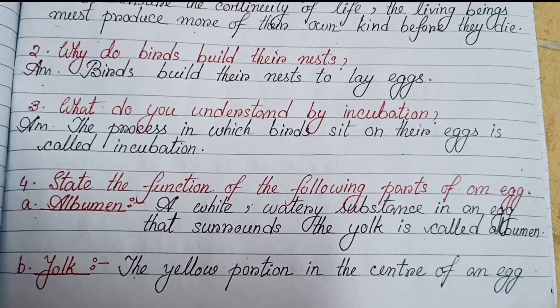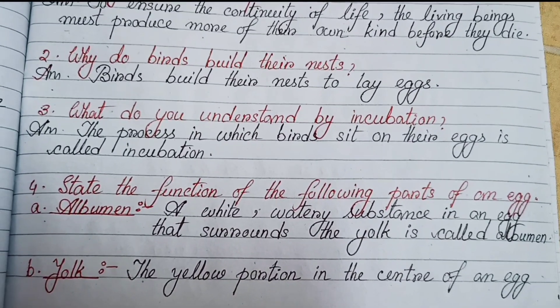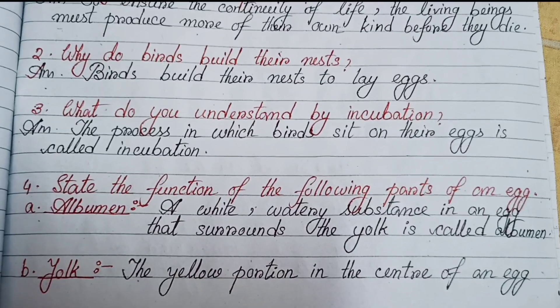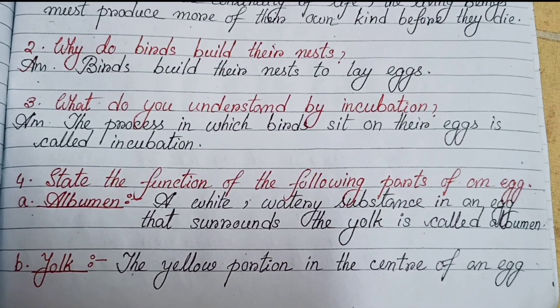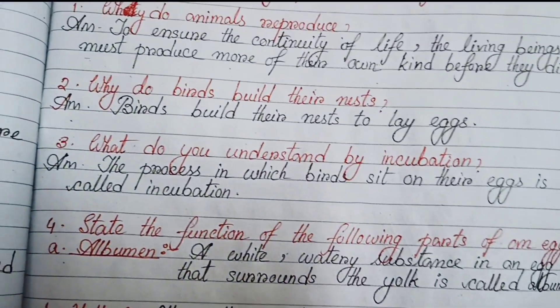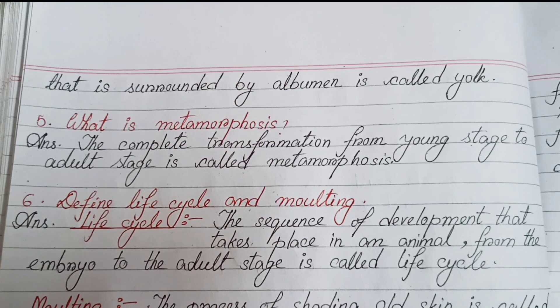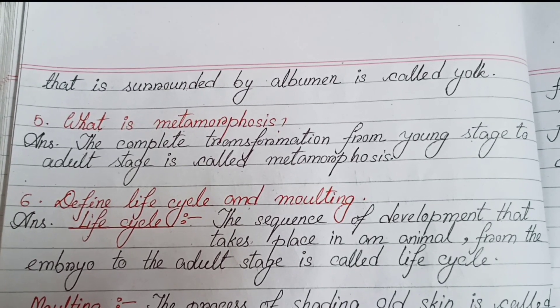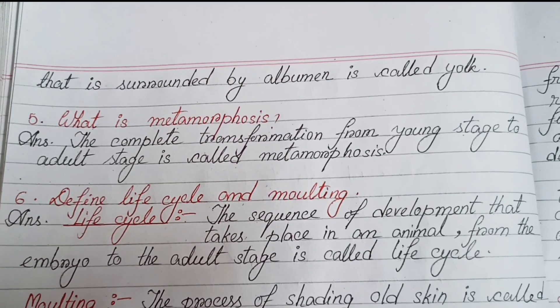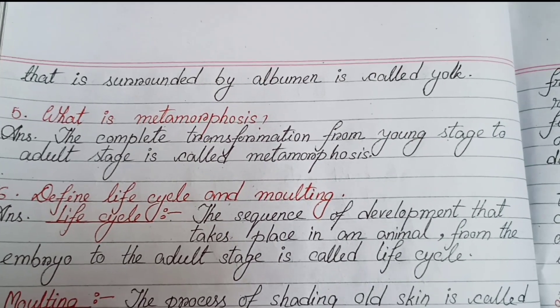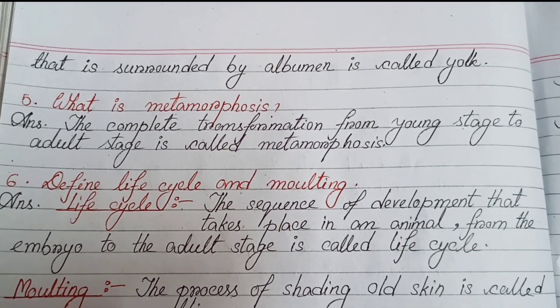Question four: State the function of the following parts of an egg. Albumin: the white watery substance in an egg that surrounds the yolk is called albumin. Yolk: the yellow portion in the center of an egg that is surrounded by albumin is called the yolk.